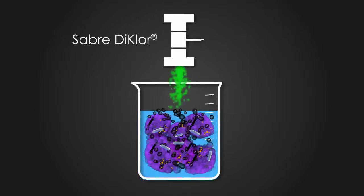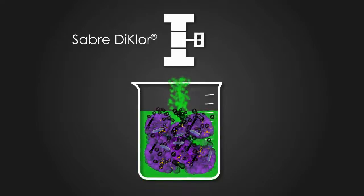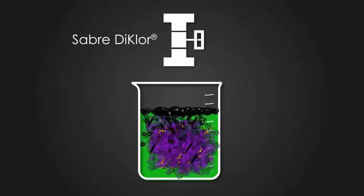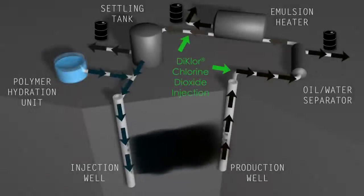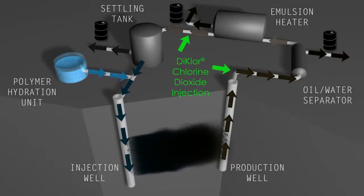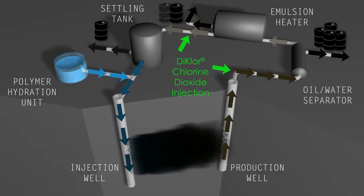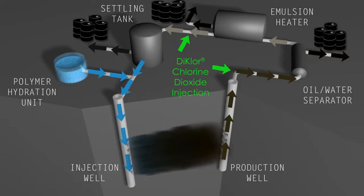Dichlor chemically breaks apart the produced fluid emulsion, separating out oil, breaking down produced polymer, and dropping out sands, solids, and contaminants. As a result, Dichlor treatment dramatically improves water quality for polymer hydration. Oil separation and reclamation is significantly more effective and often the efficacy of polymer injected into the flood is doubled.